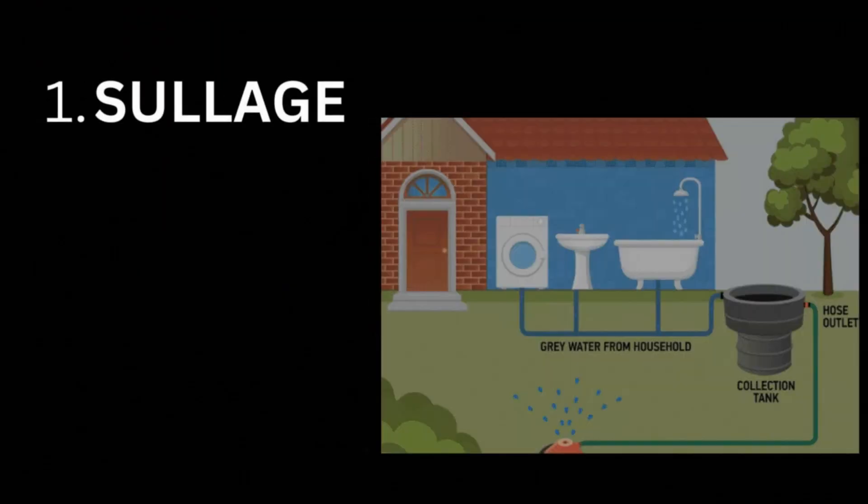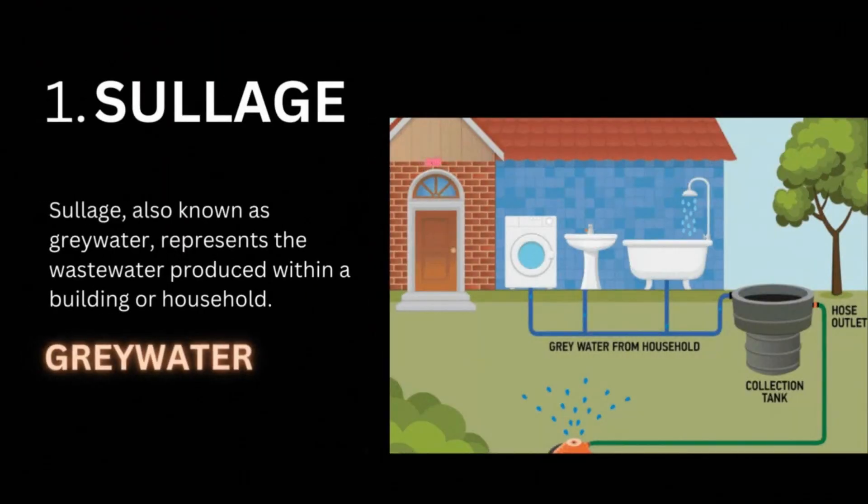Solage, also known as greywater, represents the wastewater produced within a building or household. It originates from day-to-day activities such as washing dishes, laundry, taking showers, and using wash basins.